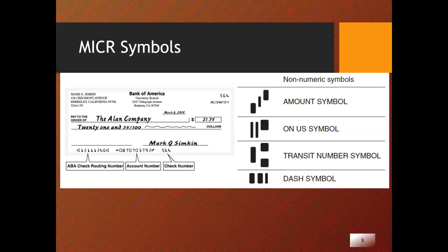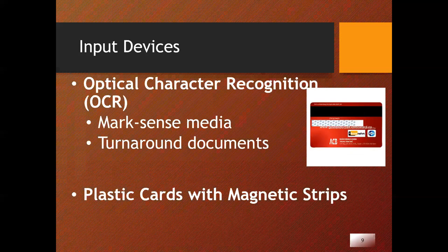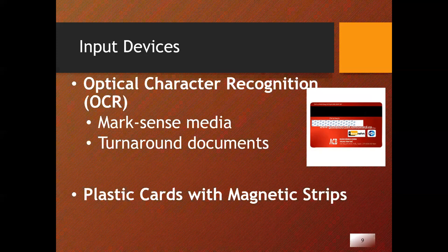The next slide will talk about OCR, the optical character recognition. It uses optical rather than magnetic readers to interpret the data found on source documents. The typical OCR device uses light-sensing mechanisms and laser technology to perform the character recognition function required to interpret the recorded data. Mark sense media, such as the type used in computerized exams, use simple rectangles or ovals as characters that you blacken with a pencil or click on the device.